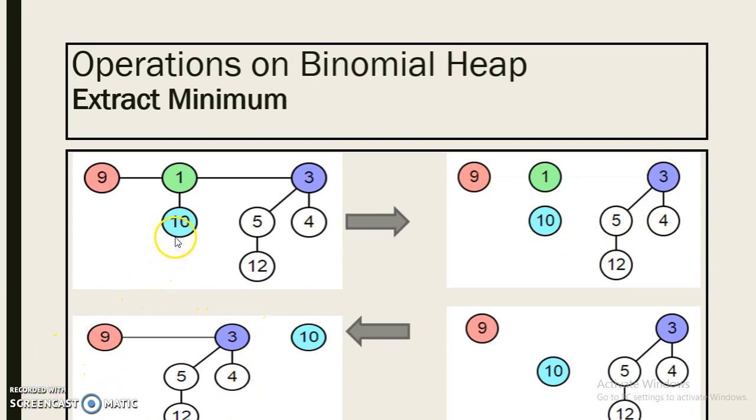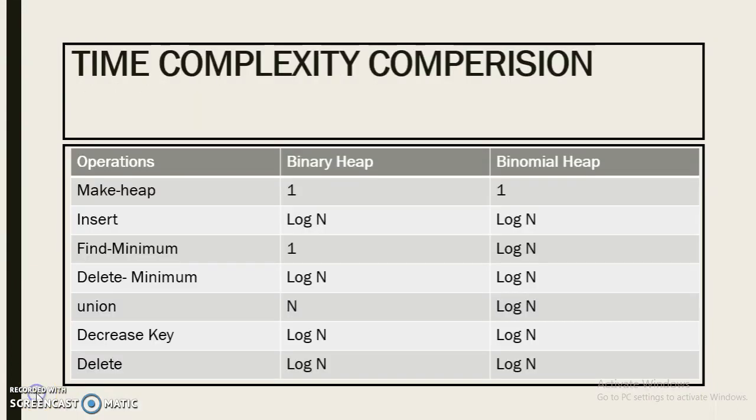Now the rest of the part of this binomial heap will get combined with each other and form a binomial heap, but this 10 will remain alone and that will act as a natural binomial tree. These two heaps can further be combined using the union operation.